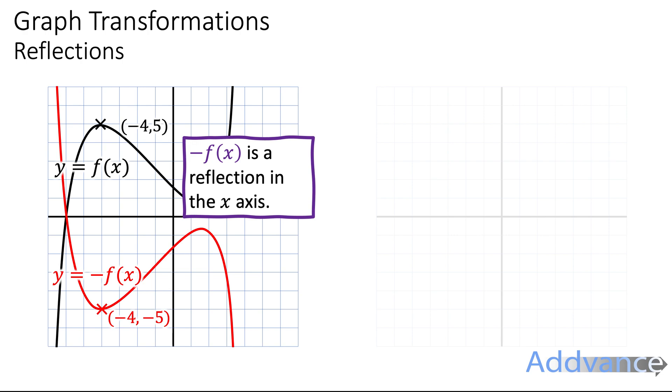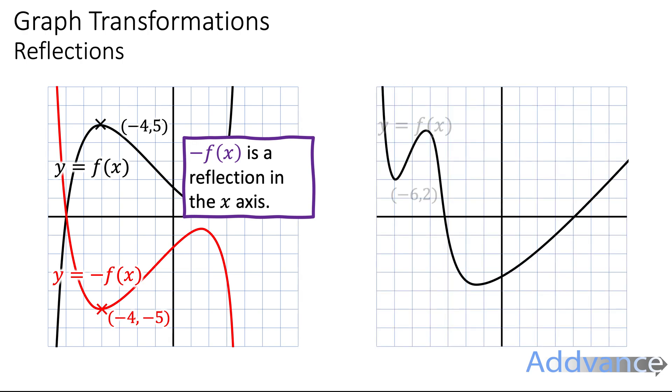Now, we've got this curve here, y equals f of x, and we're focusing on the point minus six, two. Here, we're going to do y equals f of minus x, where the minus is inside the bracket. And look at the curve, it's been reflected on the y axis.